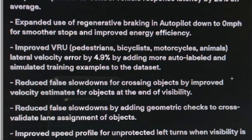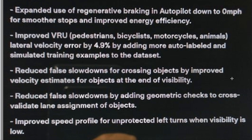Expanded use of regen braking on autopilot down to zero miles per hour for smoother stops and improved energy efficiency. I didn't actually realize the car didn't use regen all the way down to zero when doing full self-driving. That should improve battery life a little bit, but most importantly it will be much smoother. Regenerative braking is a much smoother brake than the friction brakes, and hopefully it will reduce those clunky moments where it just stops really fast.